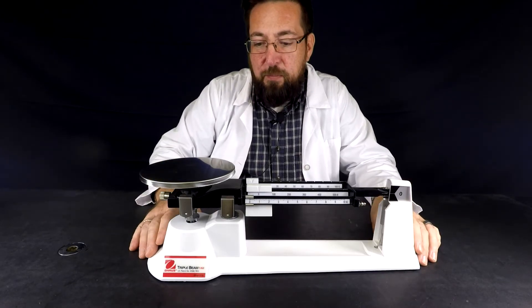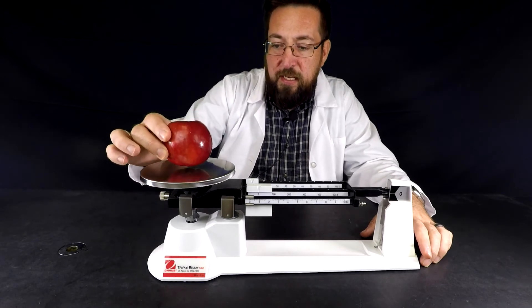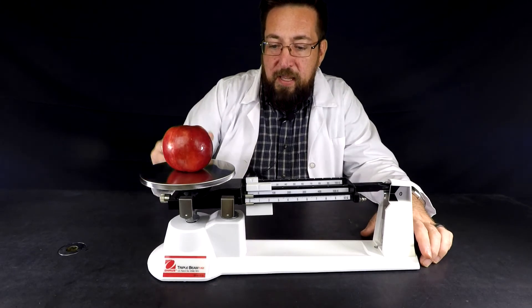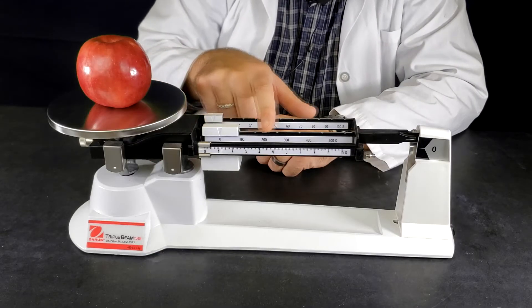So now that I've got it set up correctly I'm going to take the object that I want to find the mass of and set it on the pan. I have three different riders that I'm going to slide. The largest one is the hundreds.